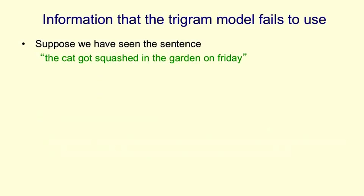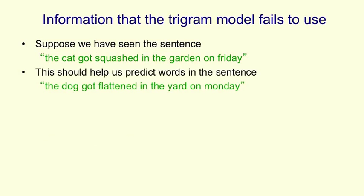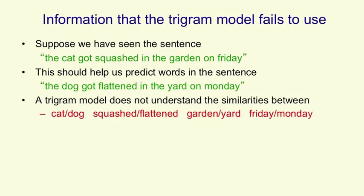Now, the trigram model fails to use a lot of obvious information that will help you predict the next word. Suppose, for example, you have seen the sentence, the cat got squashed in the yard on Friday. That should help you predict the words in the sentence, the dog got flattened in the yard on Monday. In particular, the trigram model doesn't understand the similarities between words like cat and dog or squashed and flattened or garden and yard or Friday and Monday. So it can't use past experience with one of those words to help it with the other one.